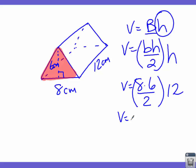We go to our calculator: 8 times 6 gives us 48, divide by 2 to get 24, then multiply by 12, which gives us 288 centimeters cubed.